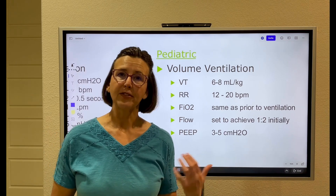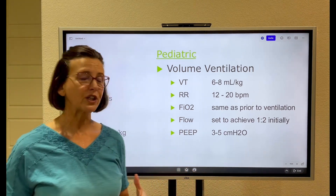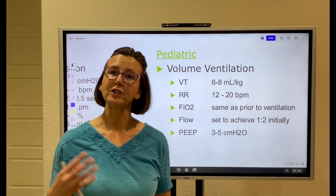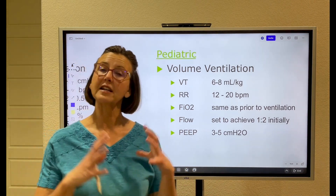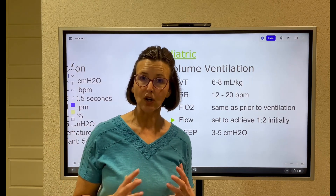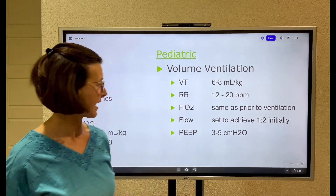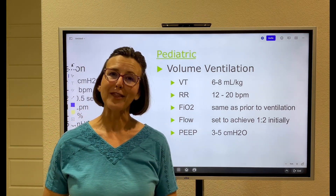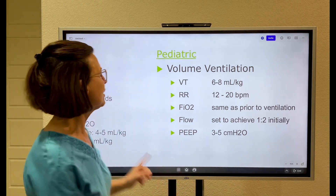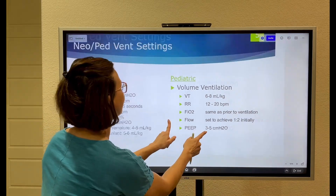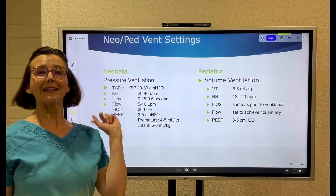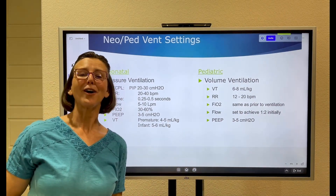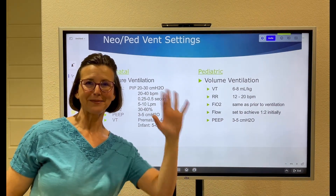Set the flow to achieve an I:E ratio of 1:2 initially, then assess waveforms. PEEP can initially be set at 3 to 5. And there you go — neonatal and pediatric ventilator settings. Hope this has helped; see you soon.